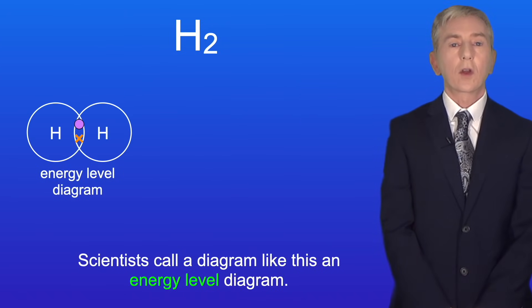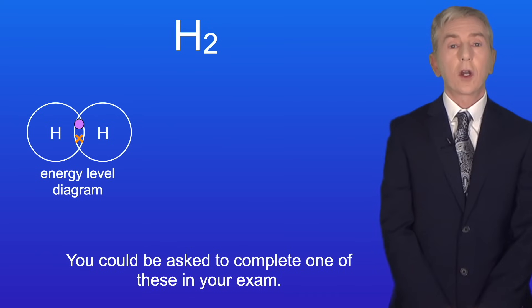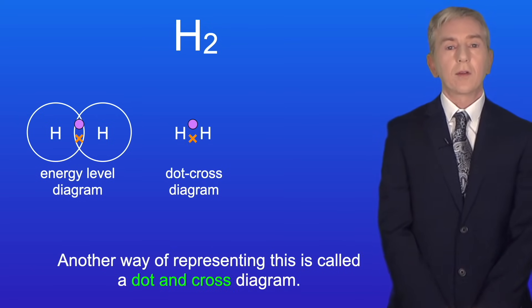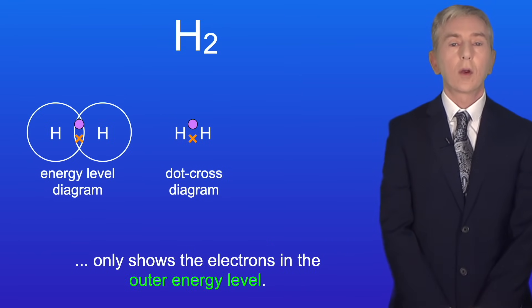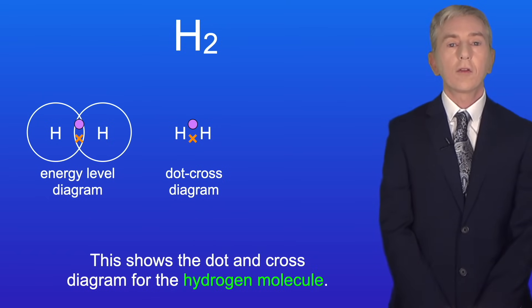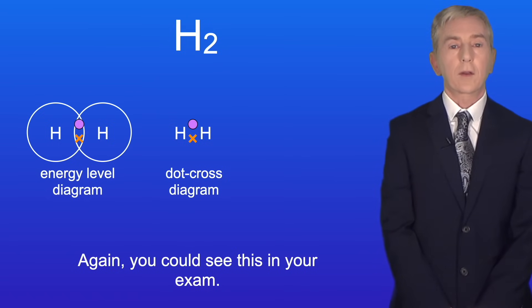Now scientists call a diagram like this an energy level diagram. And you could be asked to complete one of these in your exam. Another way of representing this is called a dot and cross diagram. Remember that a dot and cross diagram only shows the electrons in the outer energy level. So this shows the dot and cross diagram for the hydrogen molecule. And again you could see this in your exam.